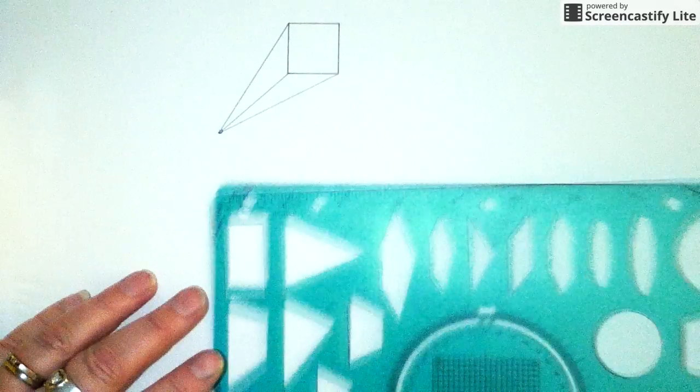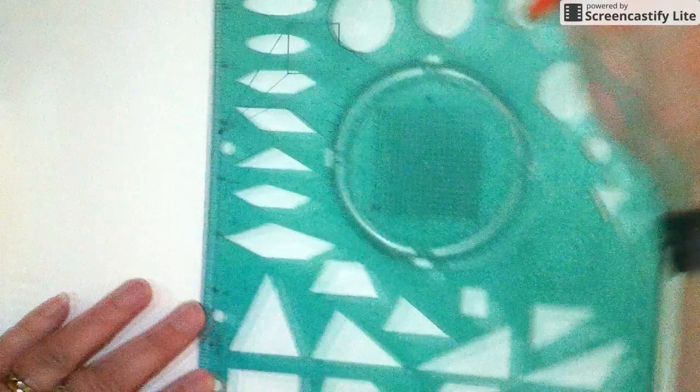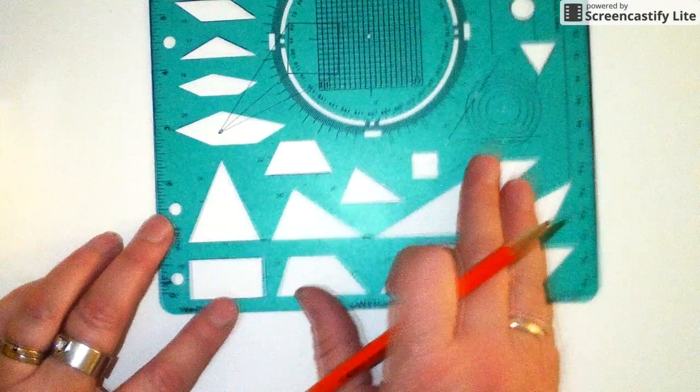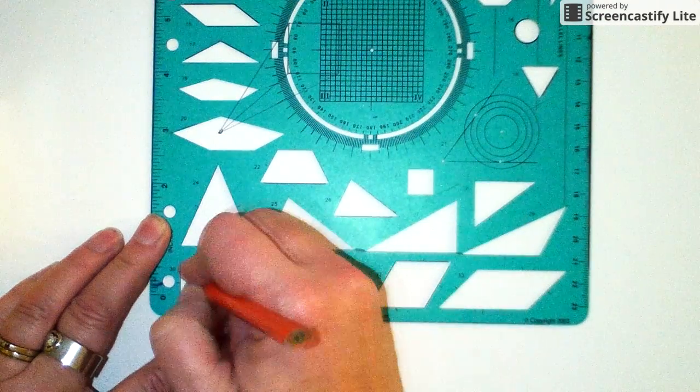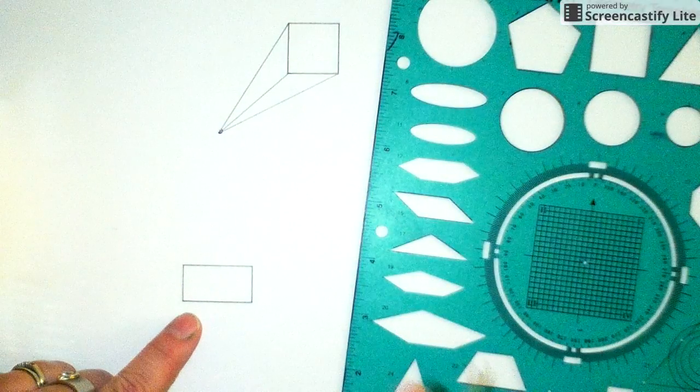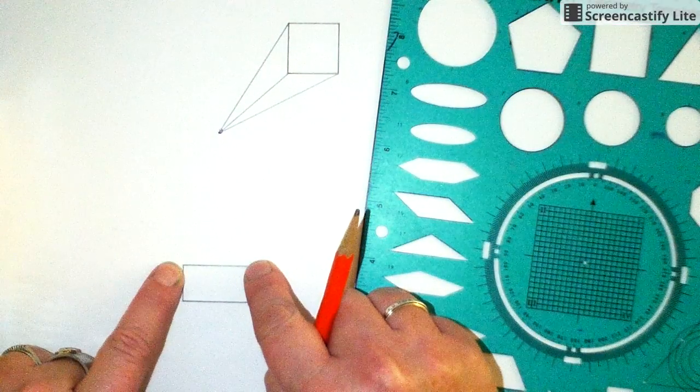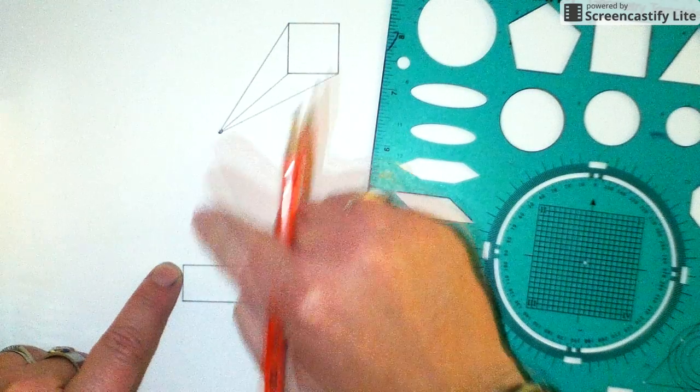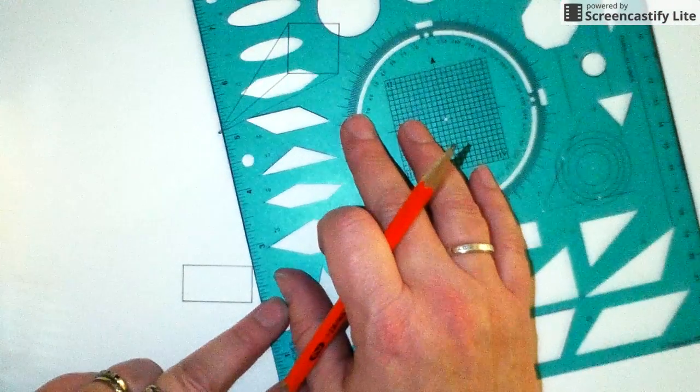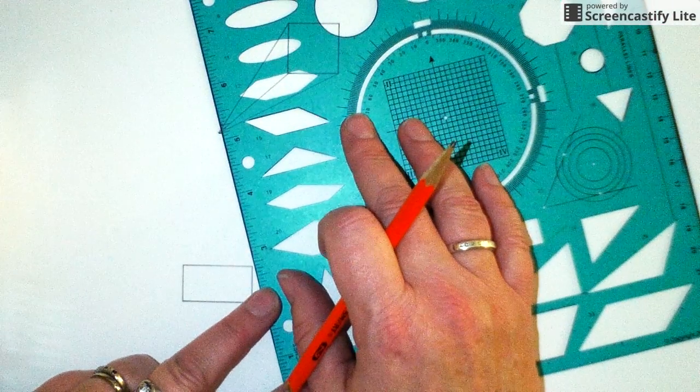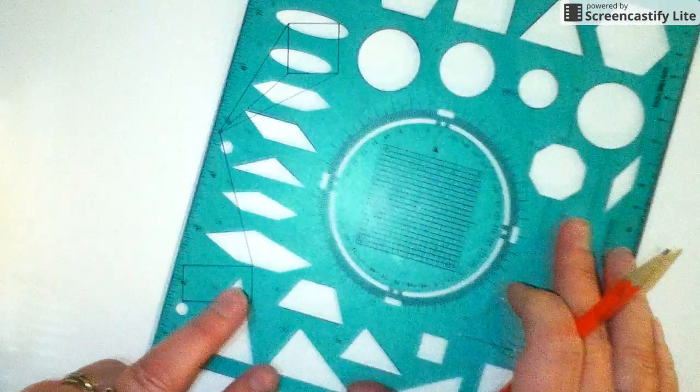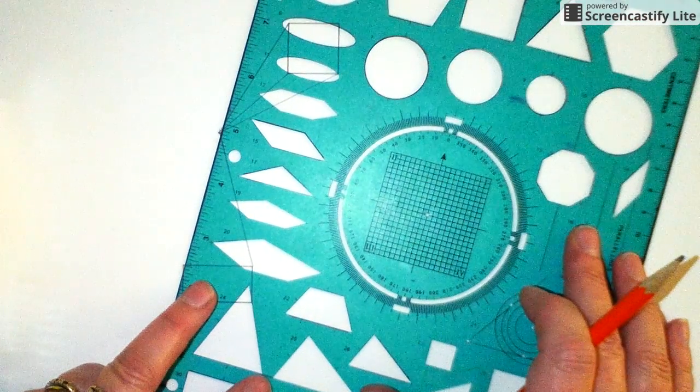All right, another one. I'm going to do a cheater one on purpose. Let's do a rectangle. All right, for the rectangle, only this one and this one this time are going to go to the vanishing point. Line it up. Get it right the first time. Take your time. And connect. And connect.